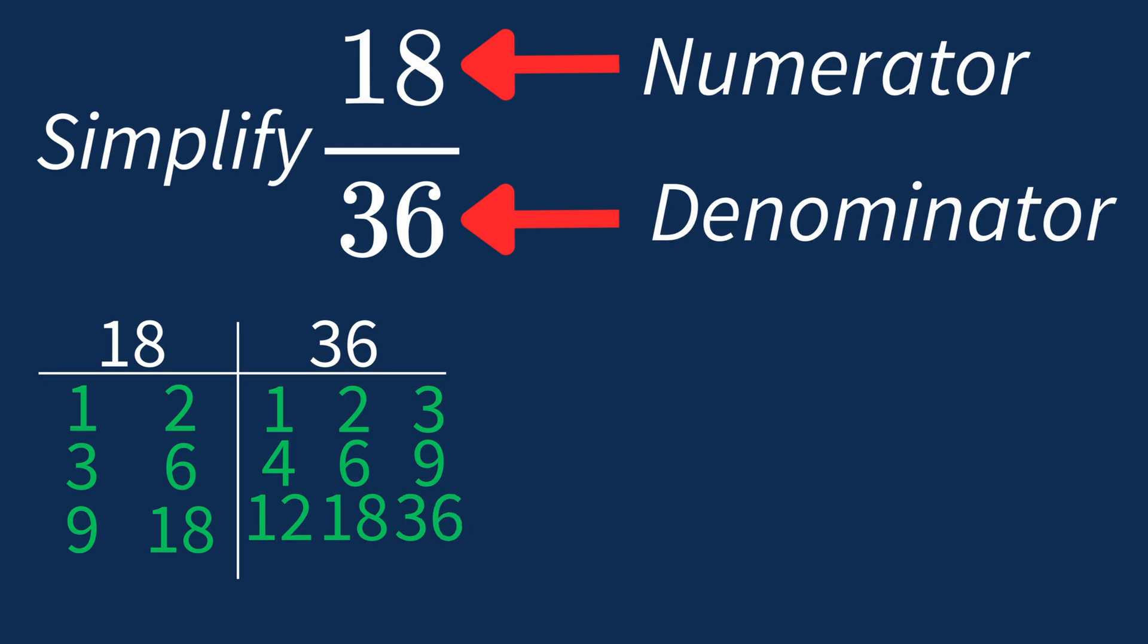So the largest common factor between 18 and 36 is 18. This means we can divide both the numerator and denominator by 18 to simplify the fraction.